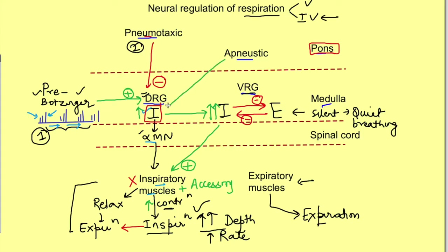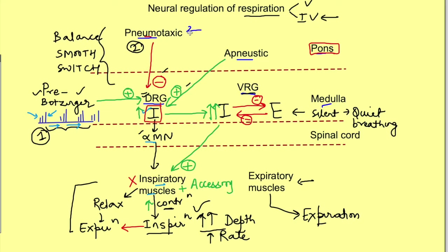The apneustic center excites the dorsal respiratory group inspiratory neurons, while the pneumotaxic center inhibits them. The fine balance between this inhibition and excitation makes the switch from inspiration to expiration smooth rather than abrupt. The pneumotaxic center thus acts as a switch for expiration. Since it limits the duration of inspiration, it causes an increase in rate of respiration. Increased depth is taken care of by simultaneous activation of the inspiratory neurons of the ventral respiratory group, so that is how increase in rate and depth of respiration is brought about.